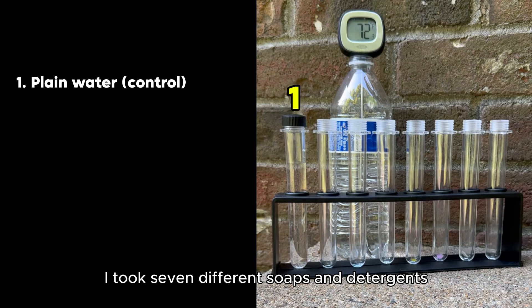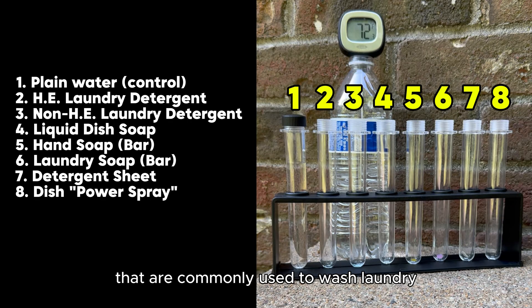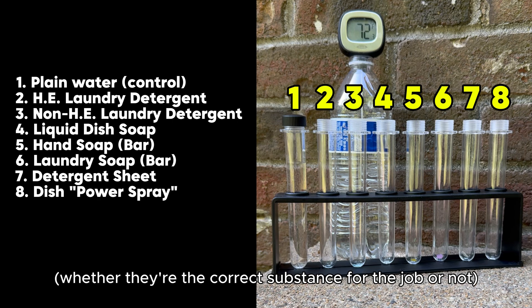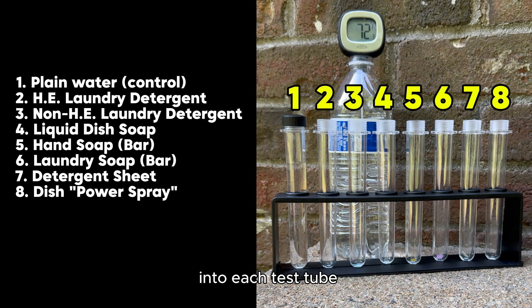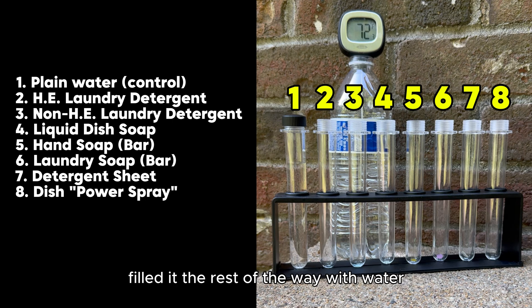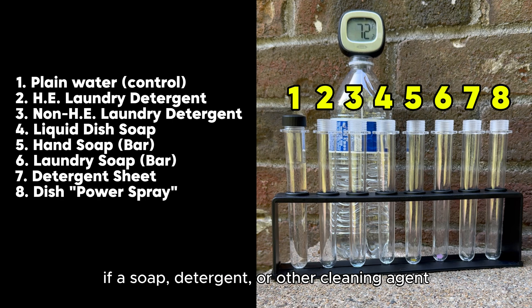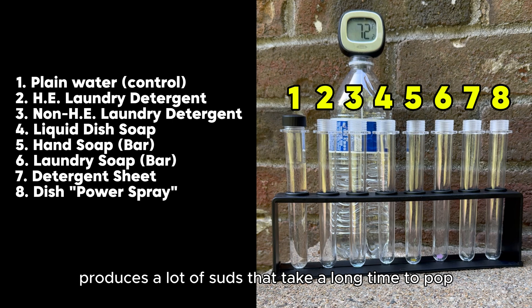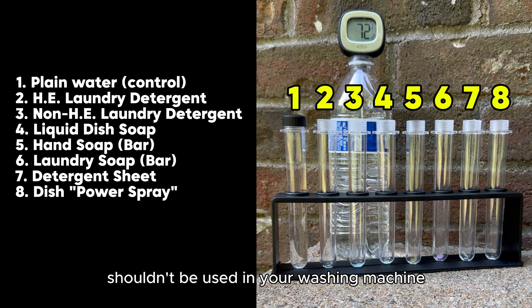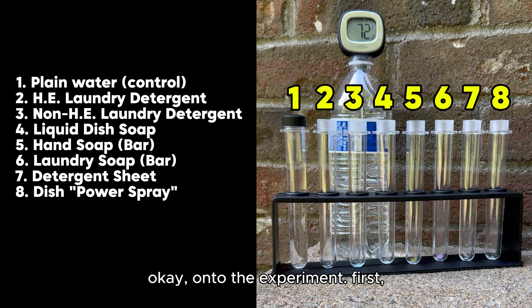To better explain this, I took seven different soaps and detergents that are commonly used to wash laundry, whether they're the correct substance for the job or not. Into each test tube, I put a tiny amount of one of the substances, filled it the rest of the way with water, and shook them up. The goal of this experiment is to see which of these substances produces the most suds and to see how long the suds produced linger once the water is still. If a soap, detergent, or other cleaning agent produces a lot of suds that take a long time to pop, that's a substance that shouldn't be used in your washing machine — because suds are bad.